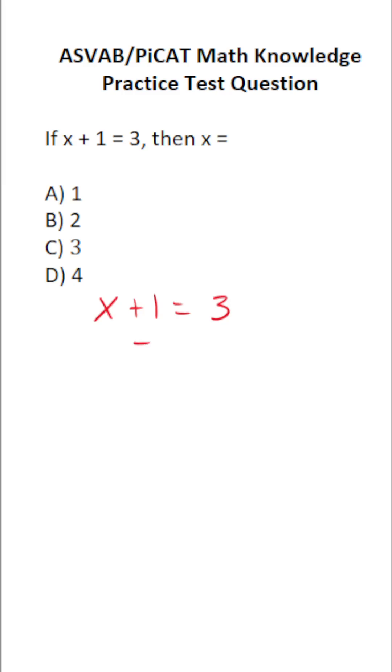So in this case, we have a one step equation. To solve it, we're just going to subtract 1 from both sides. It says x equals 3 minus 1, which is 2. So this one is 2.